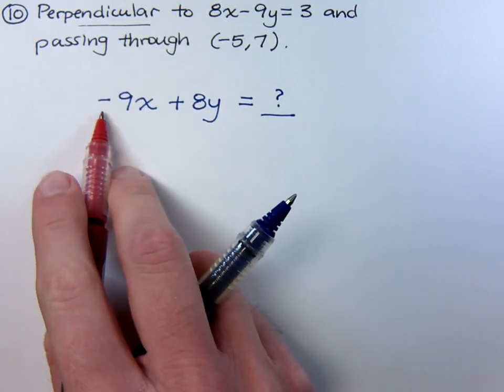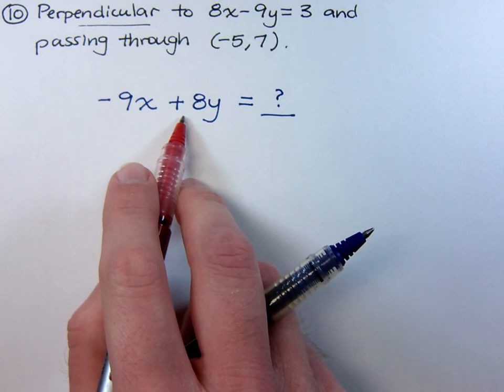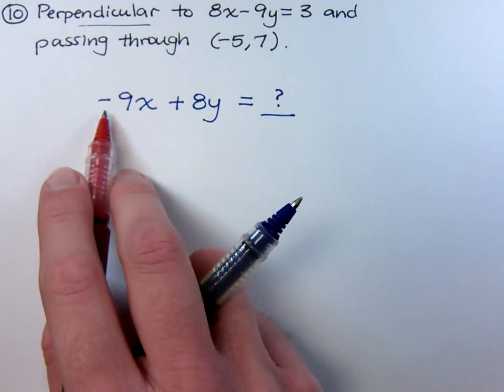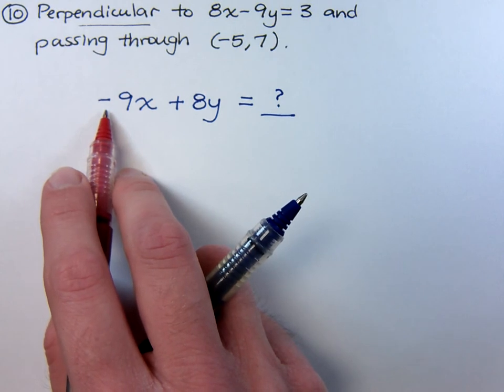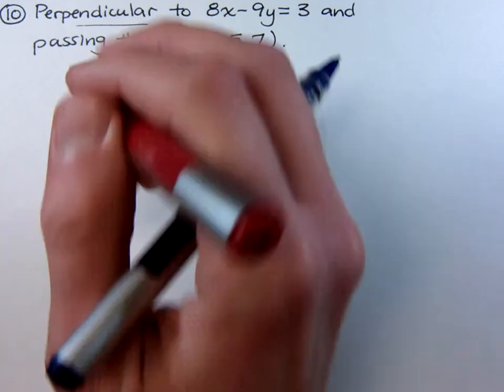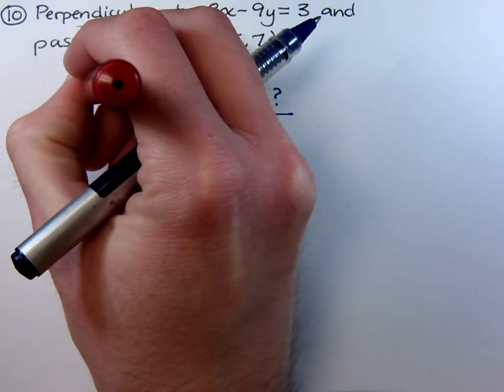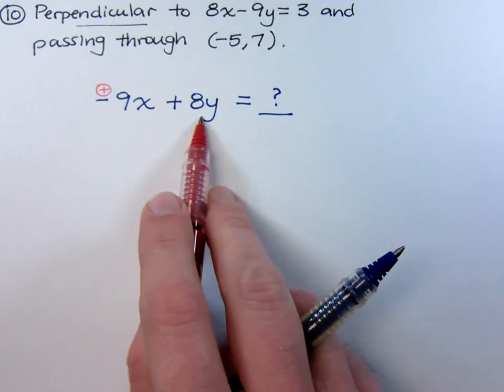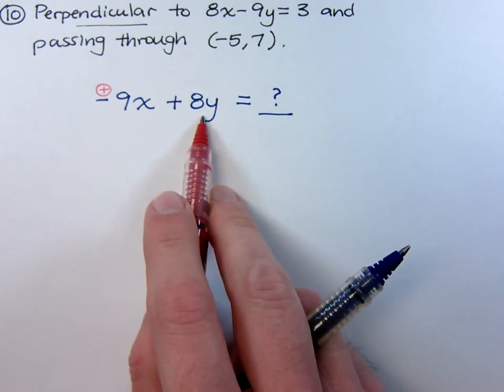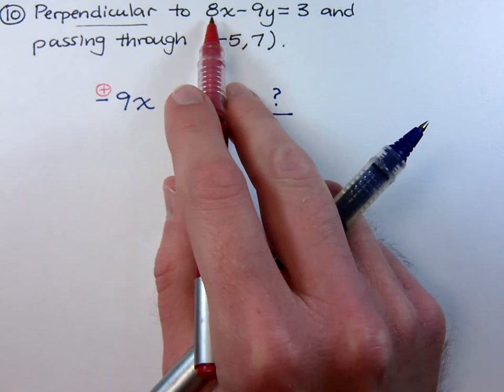Now, I can make this guy positive or I can make this guy negative. I'm going to make this guy positive because you want to make sure that your x coefficient is positive. That's the way most books and most instructors like to have standard form. So if I make this guy positive, positive 9x plus 8y will lead you to something that will be perpendicular to 8x minus 9y.